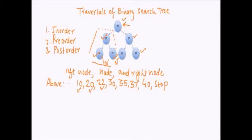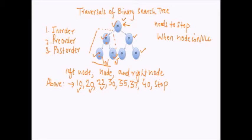If you notice, the in-order traversal of a binary search tree gives us a sorted order of elements. Let's see the implementation. Looking at the procedure: before visiting the root, the left subtree needs to be traversed in order, then the root is visited, and finally the right subtree is traversed in order. We are repeating the same process at every node — this is the classic case of recursion. For recursion, there needs to be a base case. The traversal stops when the node is null, because if a null tree is passed into the traversal, we return from the function. Till the node is not null, we keep traversing the tree.